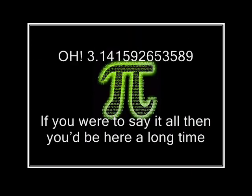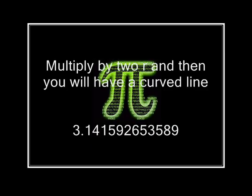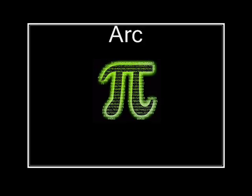3.141592653589. If you were to say it all then you'd be here a long time. Multiply by 2R and then you will have a curved line. 3.141592653589.